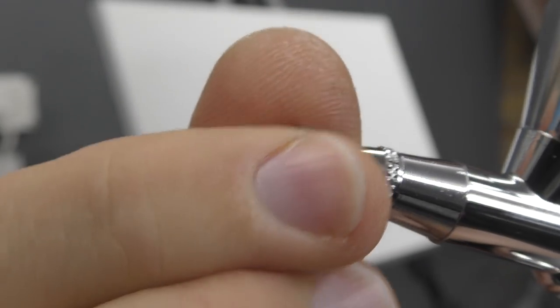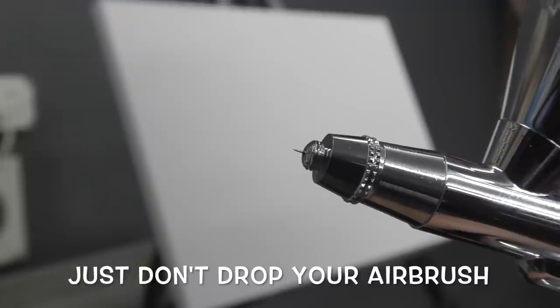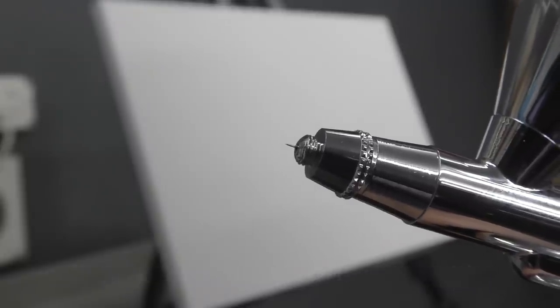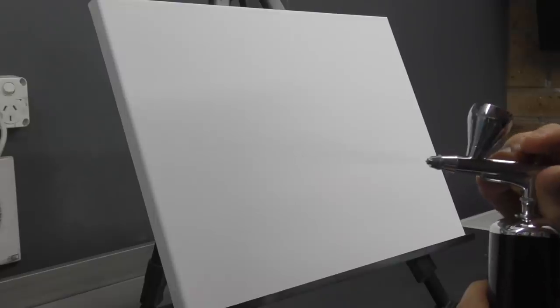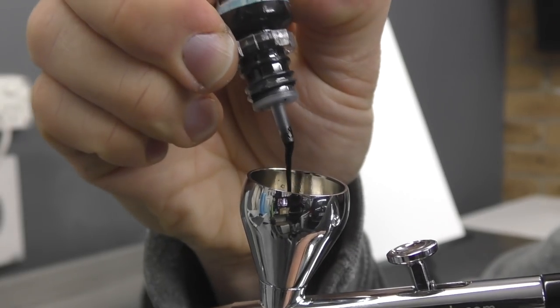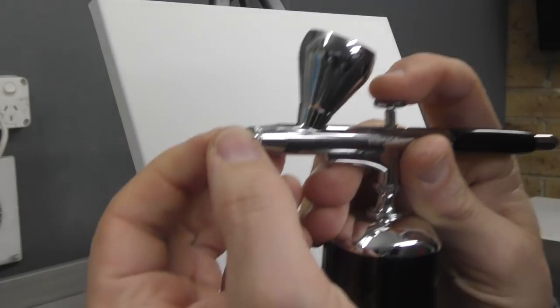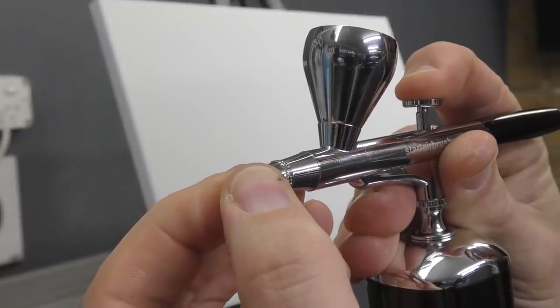I'm going to go ahead and remove the air cap for the purpose of this test. I always like spraying without the air cap. First thing I'm going to do is just put a bit of reducer in, spray that out. And then I'm going to add some Trident Black. My finger over the front. Pull back to bubble it in the cup.